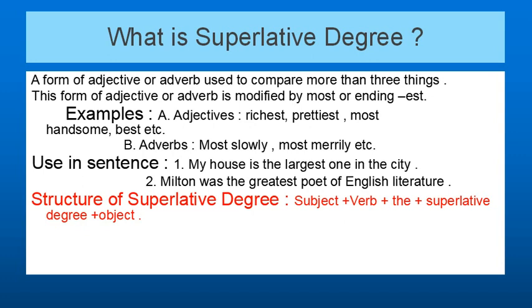When we use superlative degree in a sentence, for example: 'My house is the largest one in the city' — here 'large' is the adjective with '-est' added. Another example: 'Milton was the greatest poet of English literature' — here 'great' becomes 'greatest'. So the structure for a superlative degree sentence is: subject plus verb plus 'the' plus superlative degree plus object.